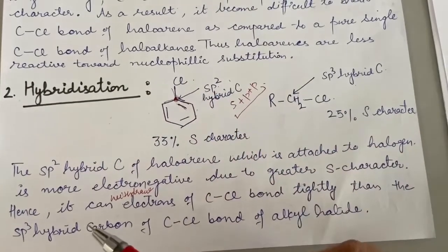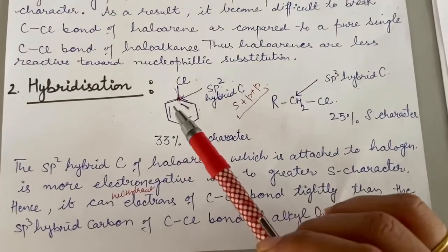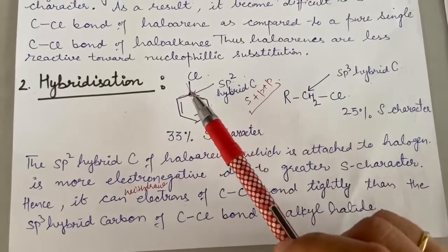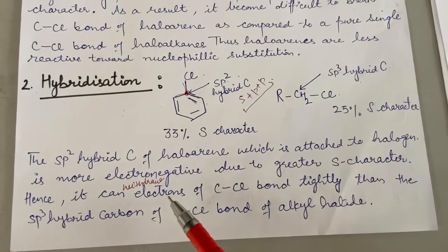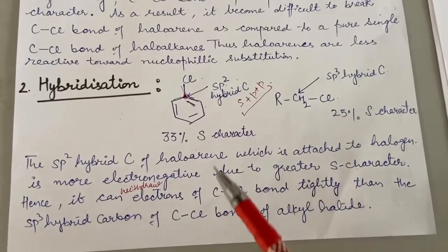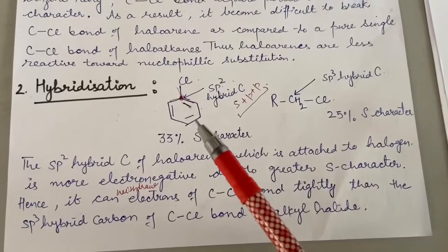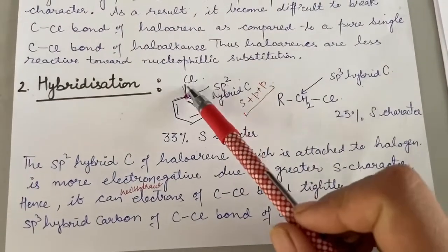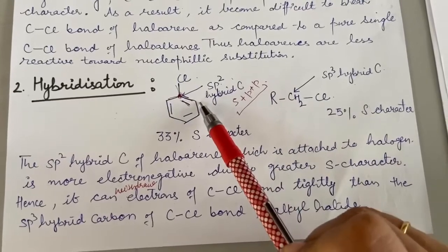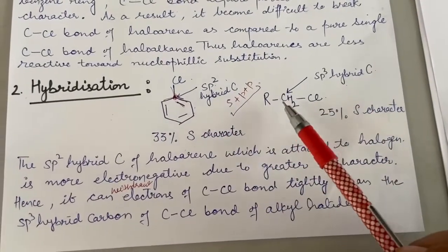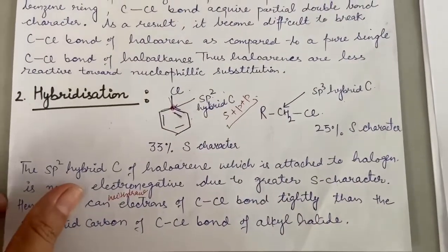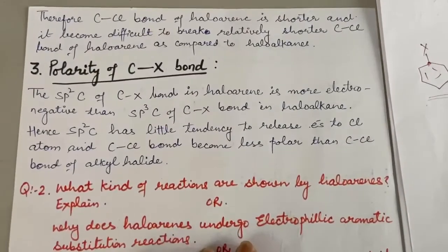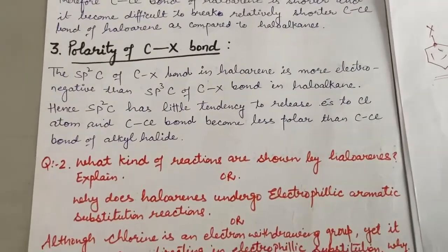Although Cl is the most electronegative element, due to SP2 hybridization, the carbon has 33% S character and can withdraw the C-Cl bond electrons tightly toward itself. As a result, the carbon-chlorine bond in haloarene will be shorter as compared to the carbon-chlorine bond of haloalkane. Since the C-Cl bond in haloarene is shorter, it would be more difficult to break as compared to the C-Cl bond of haloalkane. The next point is the polarity of the C-X bond.